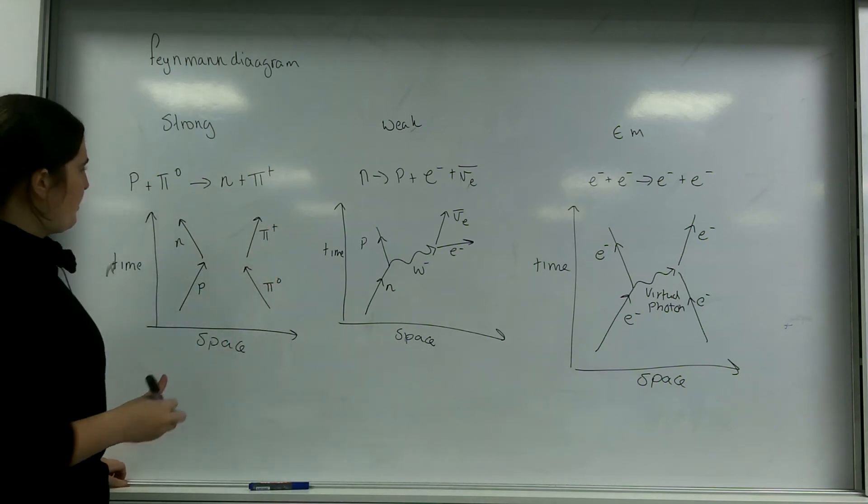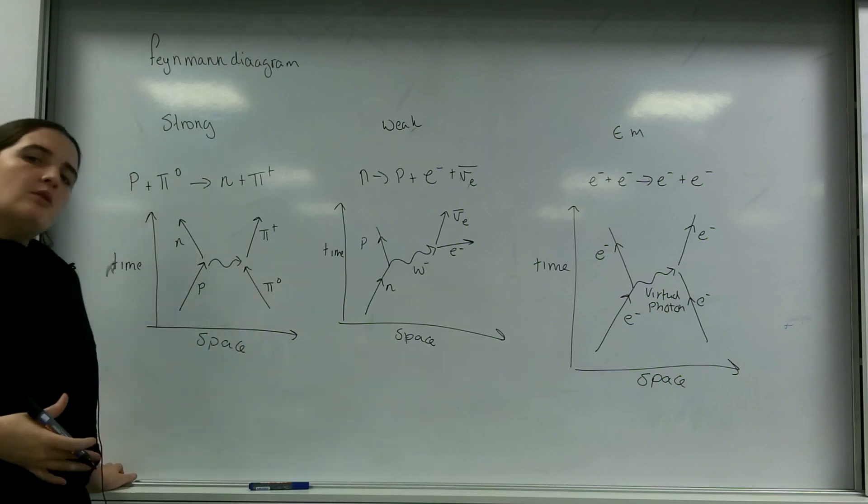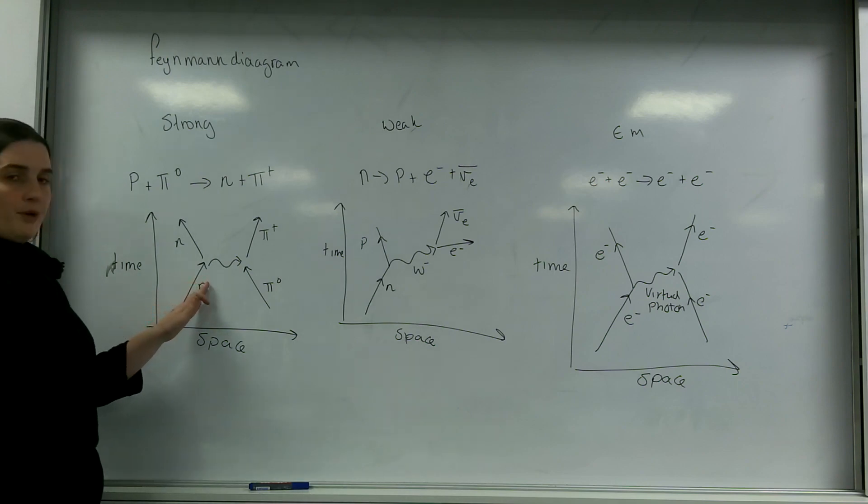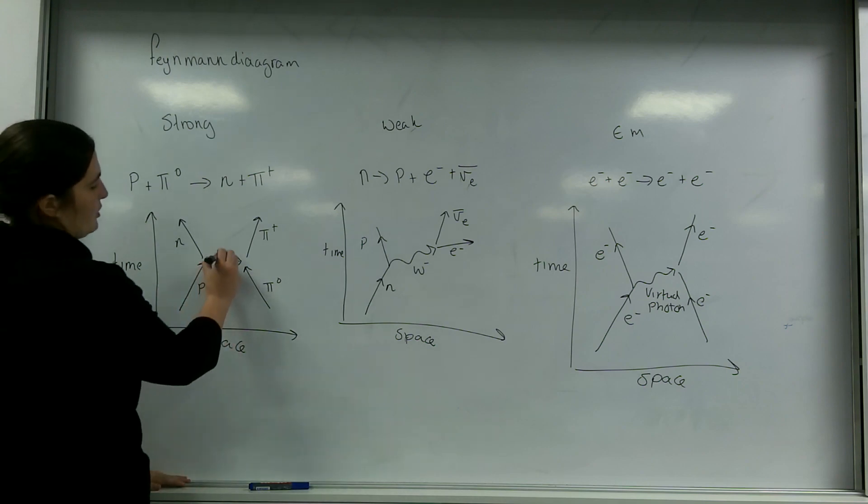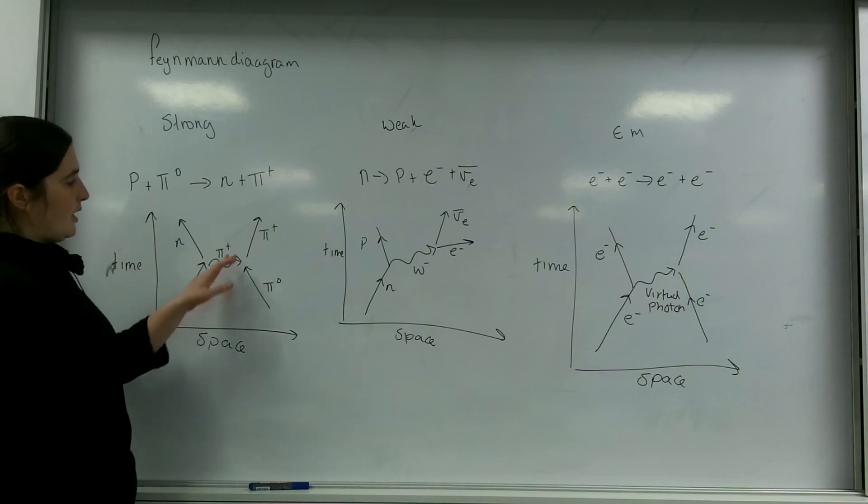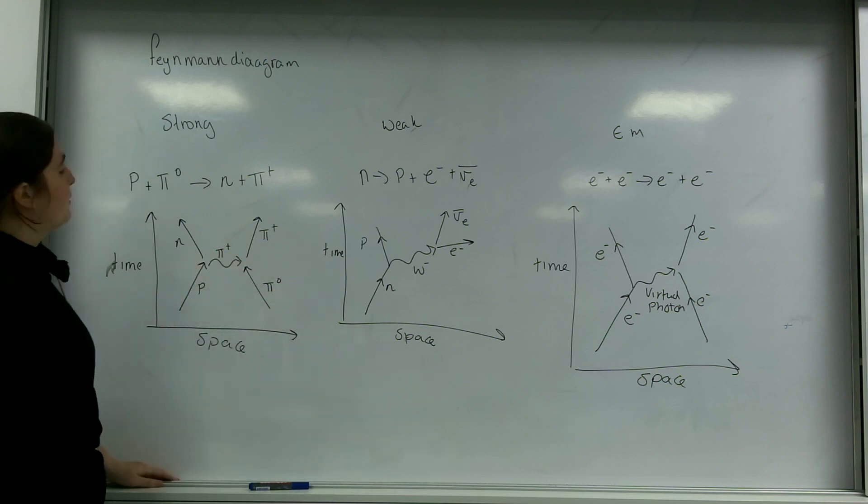The exchange particle here is either a gluon or a pion. In this case, you can see that the proton comes in and it's lost its positive charge, so I could say it is a pion plus. It then gives the charge to the pion naught and the pion becomes a pion plus.